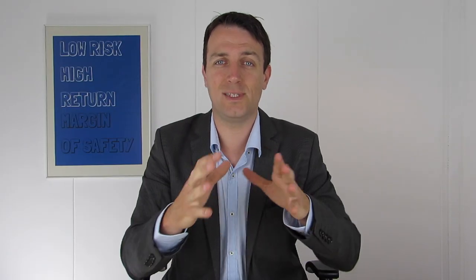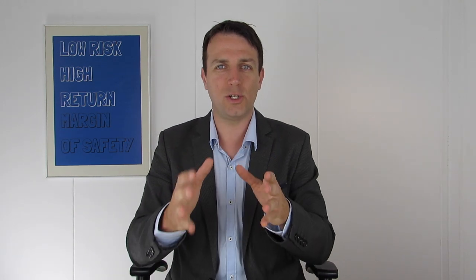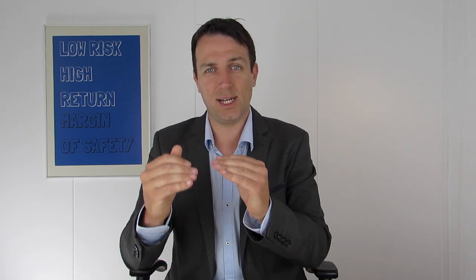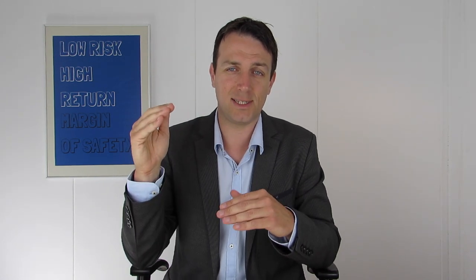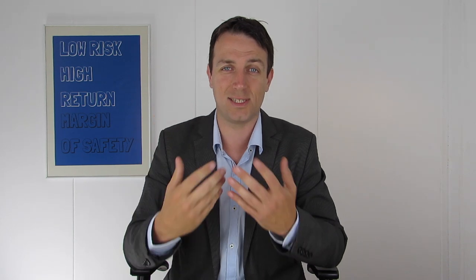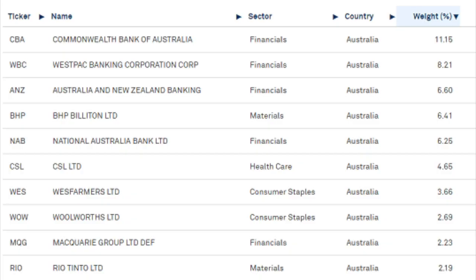An important note here: the Australian dividend withholding tax is from 0% to 30% and depends on your personal income. So check with your broker and financial advisor how you are taxed on Australian dividends. However, even if you're taxed at the maximum 30%, a dividend yield of 6% becomes 4%, which is still better than the 2% the S&P 500 offers, plus the currency benefit. If you want more diversification, there is always the iShares Australian ETF, which gives exposure to a broad basket of stocks and has a dividend yield of 4.77%.